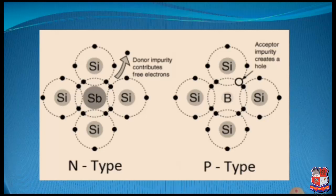In N-type semiconductor we have an excess number of electrons, meaning the number of electrons in N-type semiconductors will be higher. On the other hand, for P-type semiconductor we have an excess amount of holes, meaning we have a higher number of holes in P-type semiconductor. The N-type can be acronymed as negative type semiconductor with reference to the negative charge of the electron, and for P-type we can consider it as a positive type semiconductor due to the positive charge of the hole.